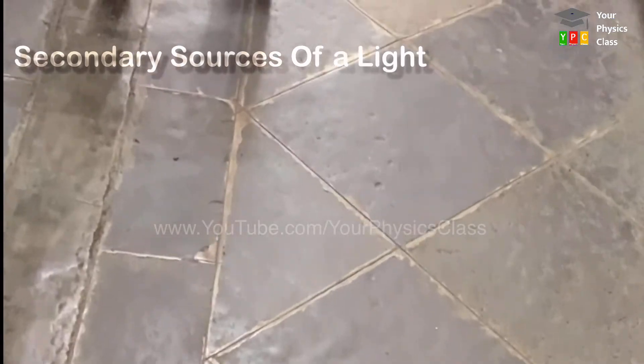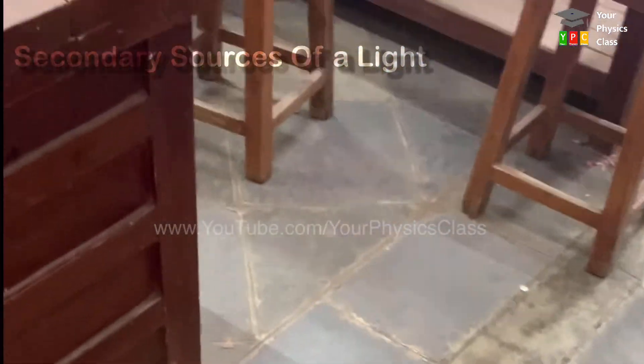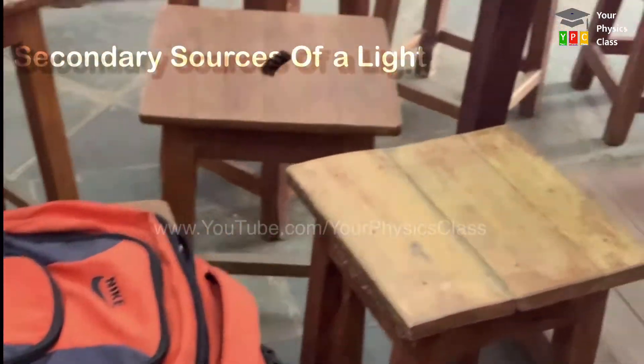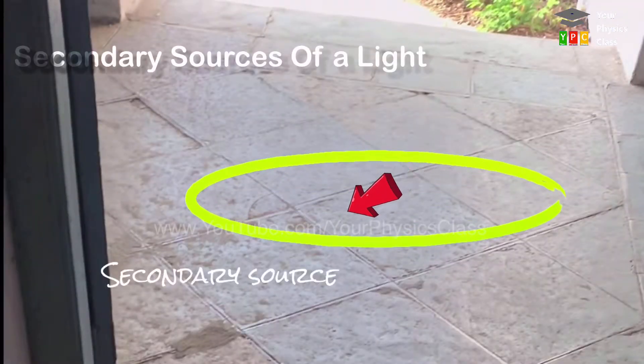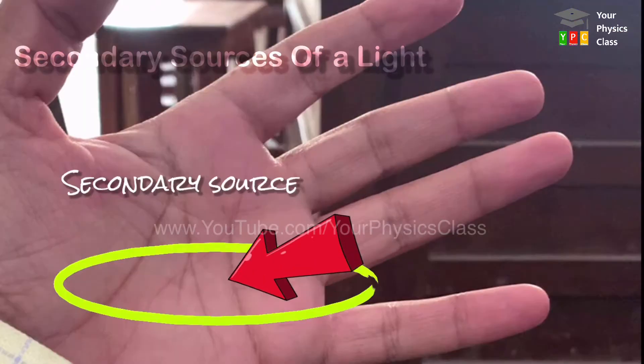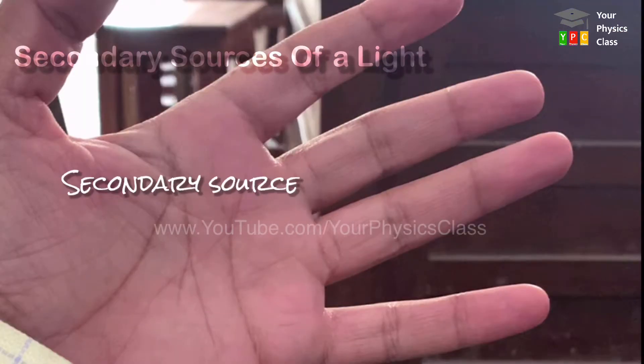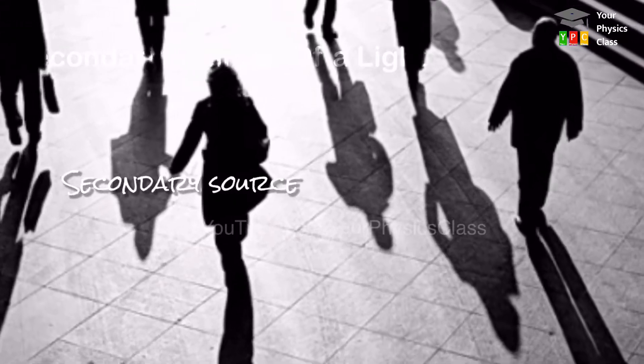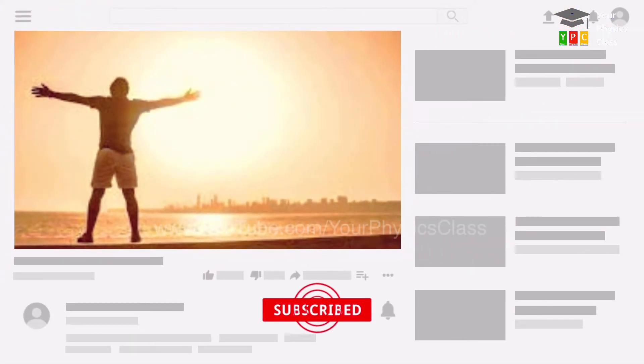When surrounding light falls on things around us, those things become visible. For things to become visible, they have to reflect light. So any object that reflects light is a secondary source of light. Now because our body also reflects light, that's why we are visible. So in this sense, we have also become a secondary source of light.